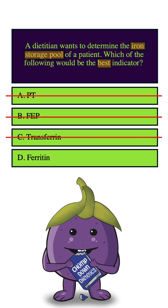How about D, ferritin? Think of the 'tin' in ferritin reminding us that ferritin is the stored form of iron. This is a direct answer to the question, so it would be the best indicator for the iron storage pool, and it is indeed the correct answer.